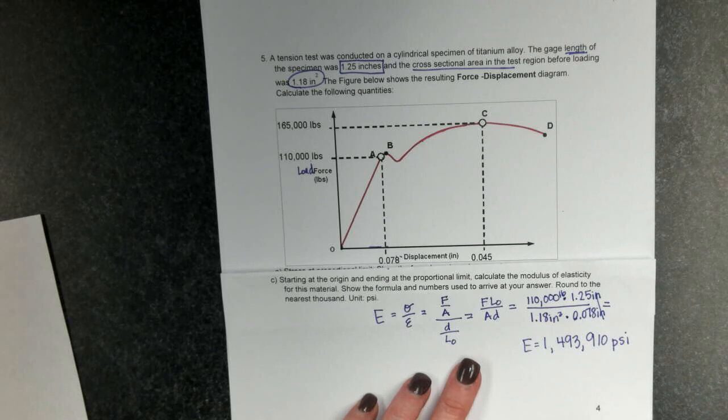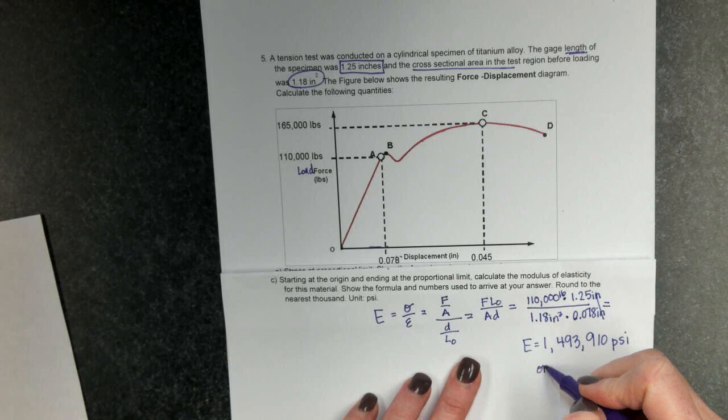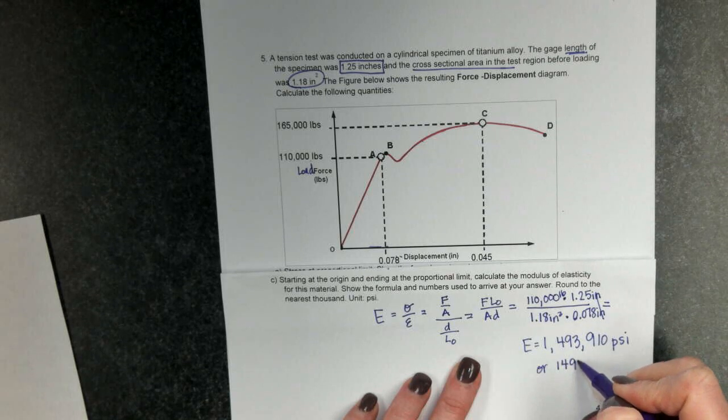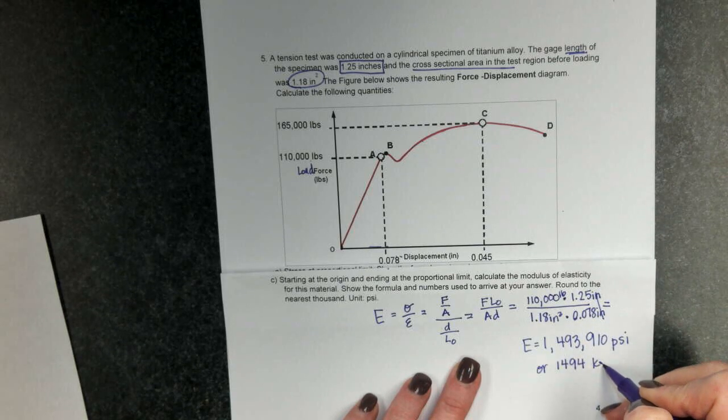Or, if you're doing kips per square inch, remember you can divide out by 1,000. That would be 1,494 kips per square inch, KSI.